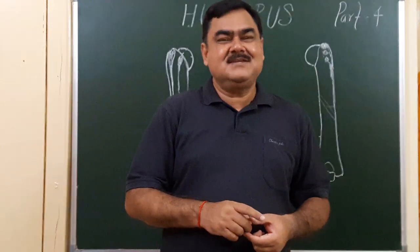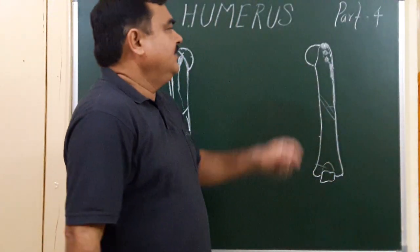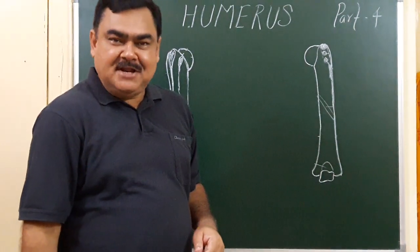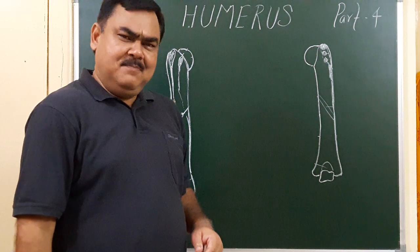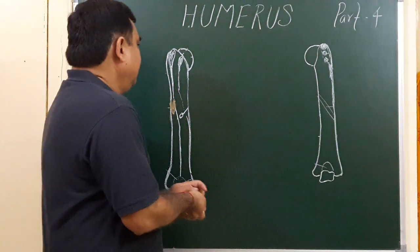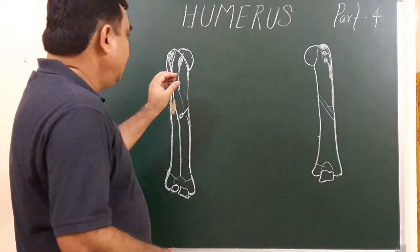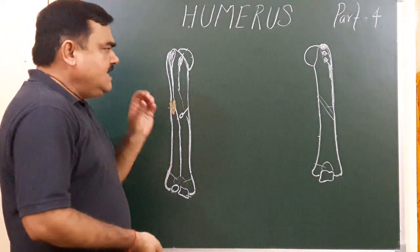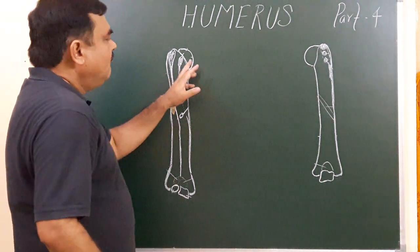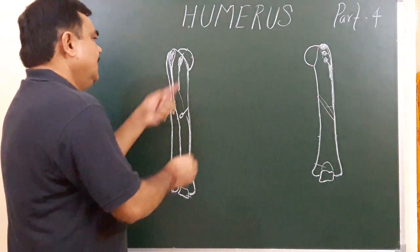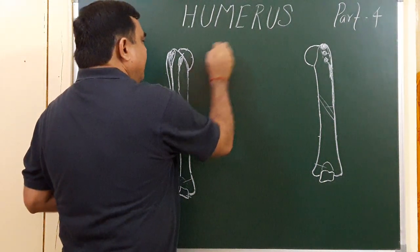Now we will discuss part four of the humerus — that is side determination. By keeping some points in mind, you can easily identify the side of the humerus. First of all, the upper end.